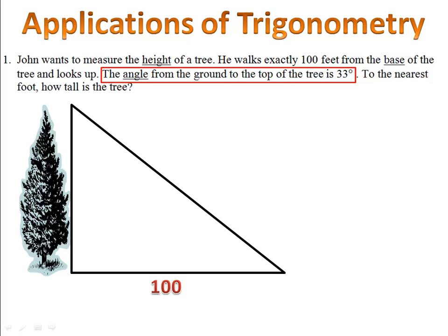Then he looks up. The angle of elevation is 33 degrees. And so we'll label that in our triangle also. Now the question says, how tall is the tree? That's what I want to find out. And so I'll call the side along the tree X.